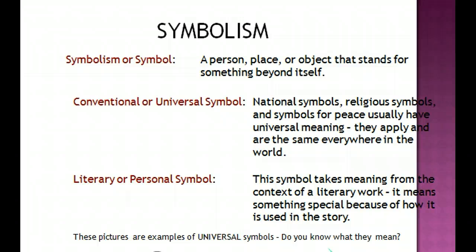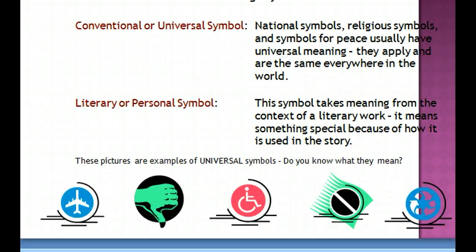An example of a literary or personal symbol would be if I received a locket from my grandmother. That locket would no longer just be a locket — it would be sentimental to me because it was given to me by my grandmother. That's an example of a personal symbol, and if that were a character in a story, that would be an example of how it would be used as a literary symbol.